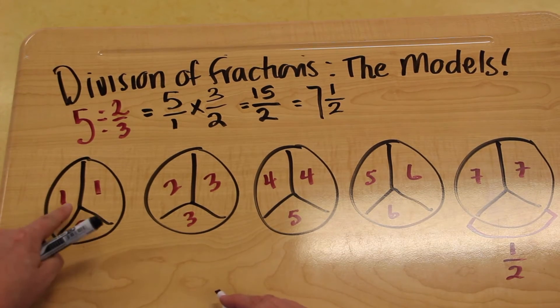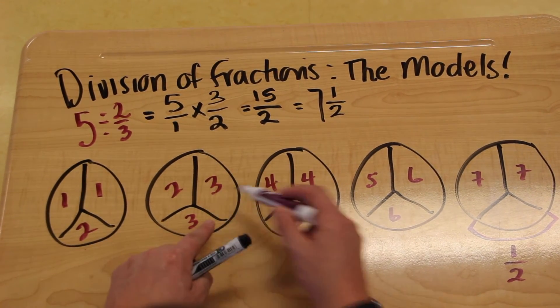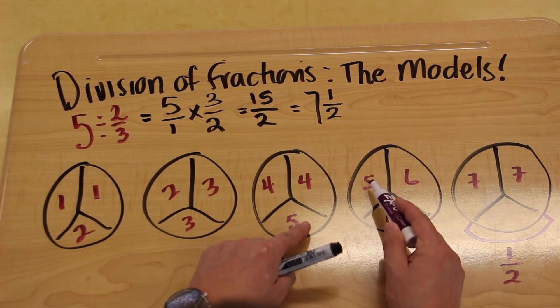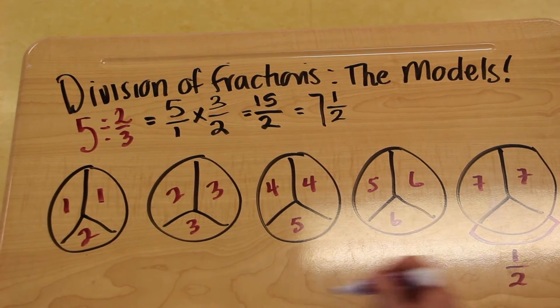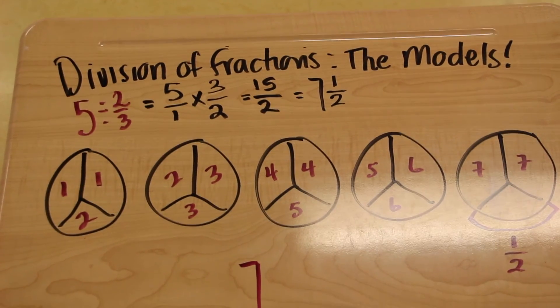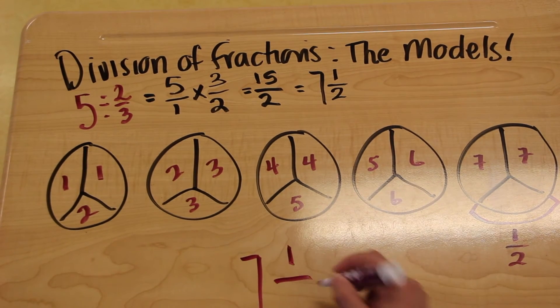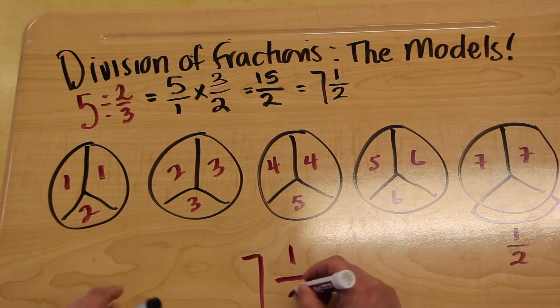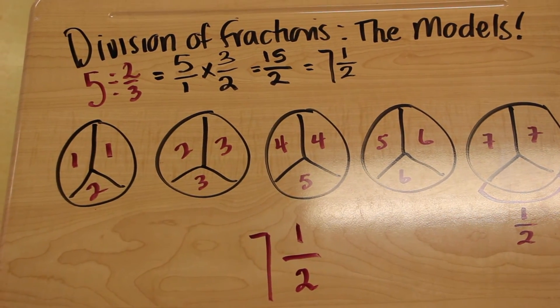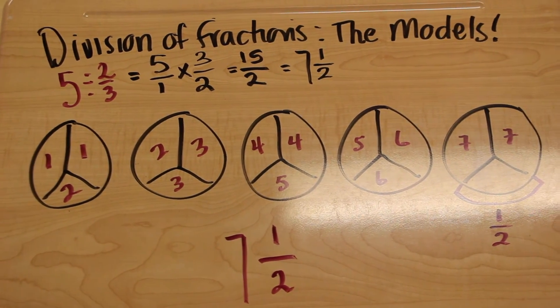So we have 1, 2, 3, 4, 5, 6, 7. Our picture represents 7 and 1 remaining out of 2. That's how you would use the model circle.